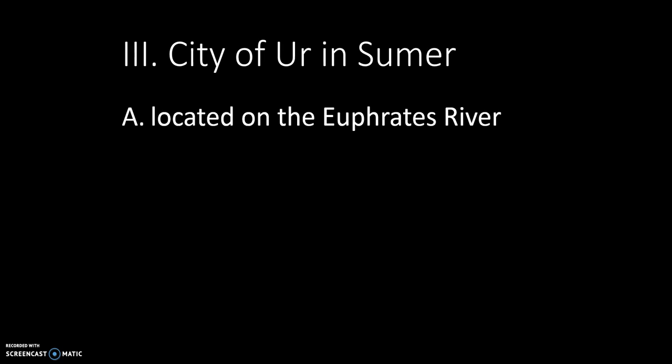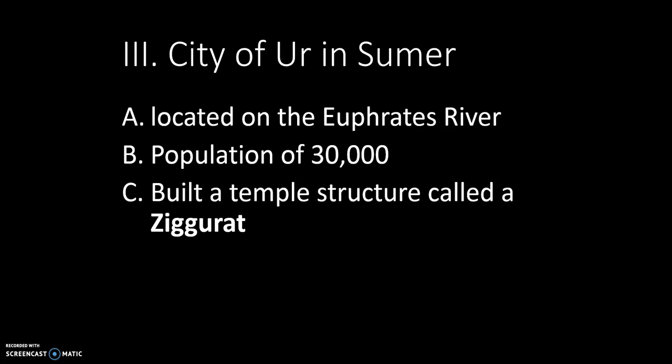The city we're going to focus on primarily today is the city of Ur in Sumer. Sumer is one of the city-states within Mesopotamia — the land between the rivers. 'Meso' means between, and 'Potamoi' in Greek means the rivers. The city of Ur is located on the Euphrates River; the Tigris and the Euphrates make up the two rivers described in Mesopotamia. It has a population of around 30,000 individuals at its height — so this is no small city — and they're known for their temple structures called ziggurats, that would have been in the city square.